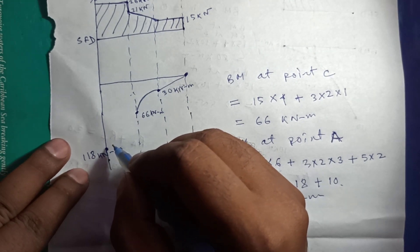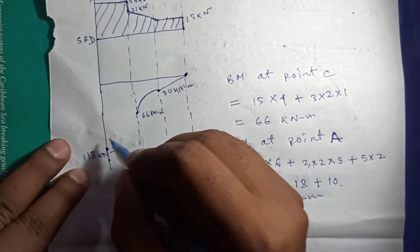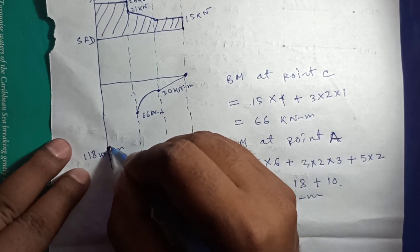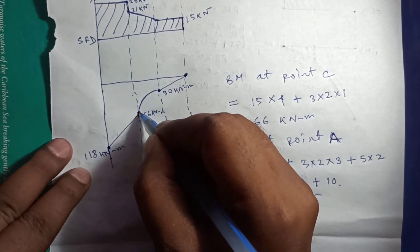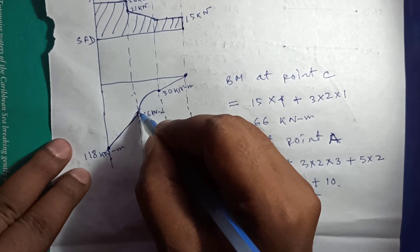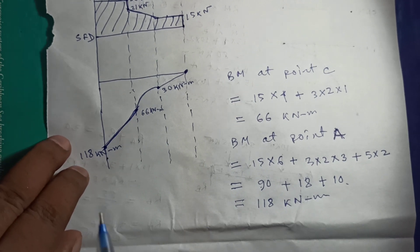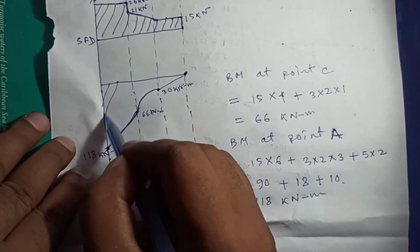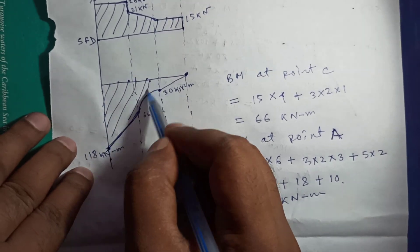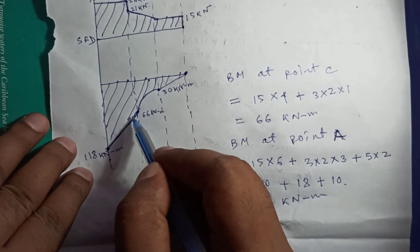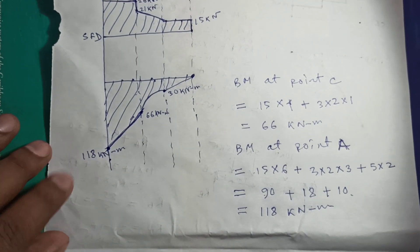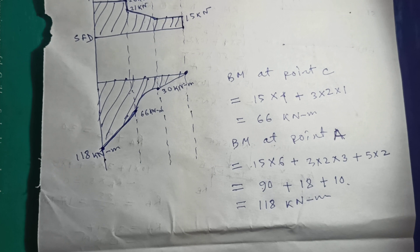We join point A and point C by a straight line because there is no UDL between them. Remember: if UDL is present, the bending moment gives a parabolic curve; if not, it is a straight line. This completes the bending moment diagram for this problem. If you have any doubt, you can leave a comment. Thank you for watching, my beloved students.